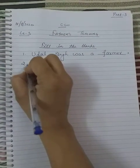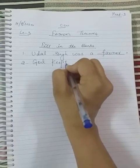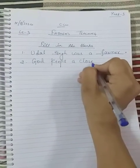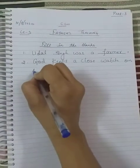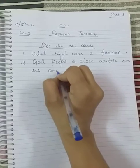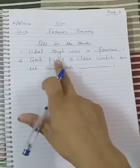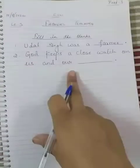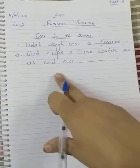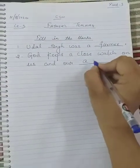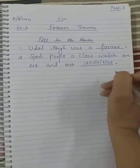Second: God keeps a close watch on us and our dash. God keeps a close watch on us and our activities. Write activities: A-C-T-I-V-I-T-I-E-S. Activities.